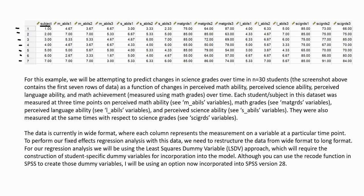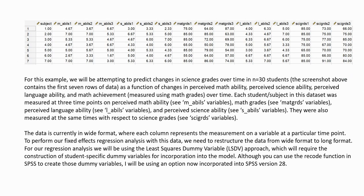The columns represent different variables measured at different time points. We have perceived math ability measured at times one, two, and three; perceived science ability measured at times one, two, and three; math grades measured across those time points; perceived language ability; and science grades measured at those three time points. Essentially, we're going to be predicting changes in science grades over time as a function of changes in perceived math ability, perceived science ability, perceived language ability, and math achievement, which is measured using math grades.